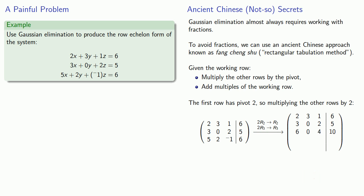4, 10. And the third row, 5, 2, negative 1, 6, can be multiplied by 2 to get 10, 4, negative 2, 12. And again, these new rows replace the original rows, so we don't need to keep the originals anymore.